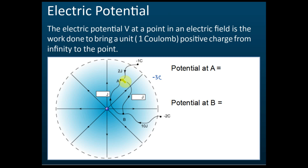From the diagram, the work done is 2 joules to move one coulomb of charge from infinity to point A. The amount of work done is related to the speed of the charge — the higher the work done, the faster the charge moves. Any point in the field has potential, meaning the ability to do work — it can move a charge.